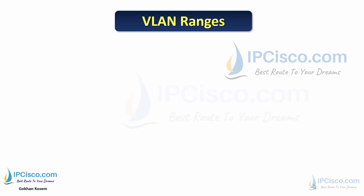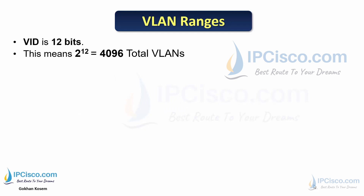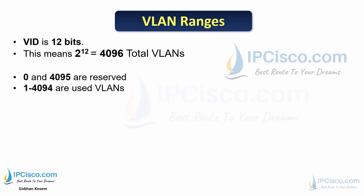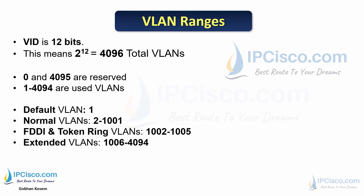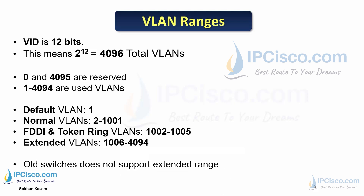What about VLAN ranges? The VID field is 12 bits long, and 2 to the power of 12 gives 4,096 total VLANs on a trunk. VLANs 0 and 4095 are reserved. VLANs 1 to 4094 are usable. VLAN 1 is the default VLAN. VLANs 2–1001 are normal VLANs. 1002–1005 are FDDI and Token Ring VLANs. VLANs 1006–4094 are extended VLANs, and old switches do not support extended VLAN ranges.